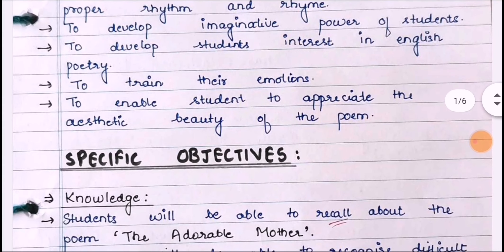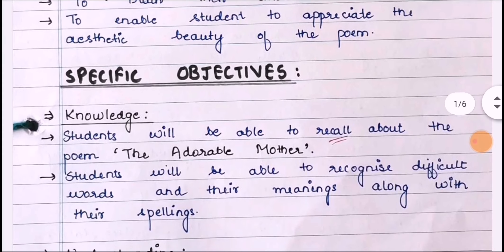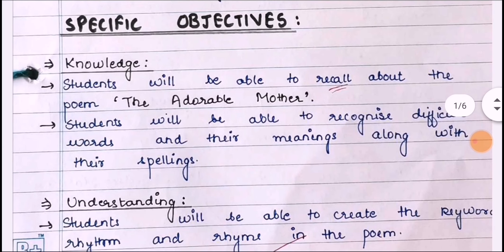Then we shall write specific objectives. The specific objectives are classified in three categories: first, knowledge; second, understanding; third, application. We will write two points in knowledge, two points in understanding, and two points in application.